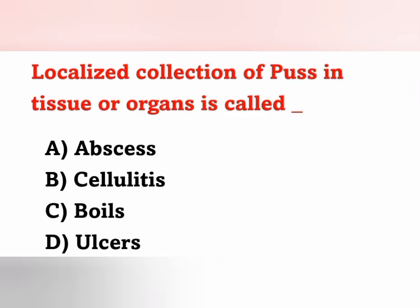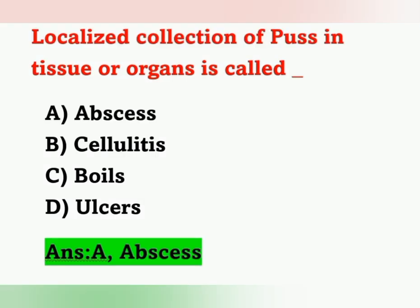Next question: Localized collection of pus in a tissue or organ is called — A) Abscess, B) Cellulitis, C) Boils, D) Ulcers. The answer is Abscess — Option A. Cellulitis means infection or inflammation of the skin. Boils are also skin infections but with no pus collection. Ulcers mean a discontinuity or break in the membrane of the skin.